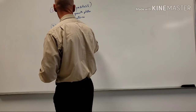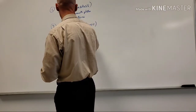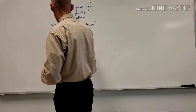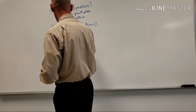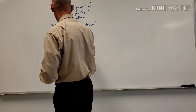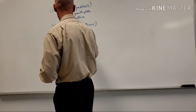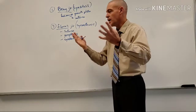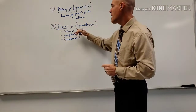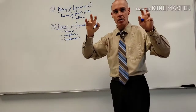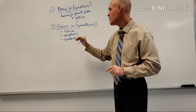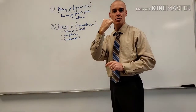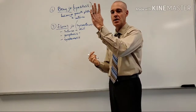Our second classification is the fibrous joint, also referred to as a synarthrosis. Under the fibrous joint we can talk about three types: sutures, the gomphosis, and the syndesmosis. Sutures are found in the skull — that's really the only place we find them — and the proper classification for a suture is a fibrous joint.